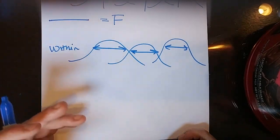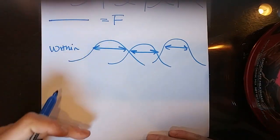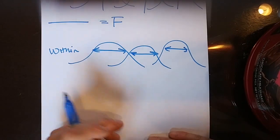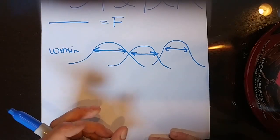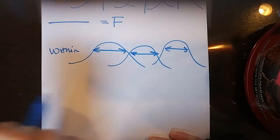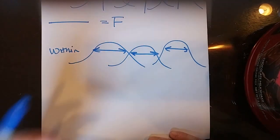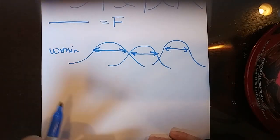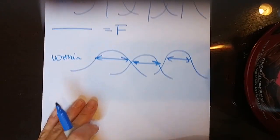Remember when we learned about variability — we had a set of scores and wanted to find the average deviation, but we couldn't just take the deviations, sum them up, and divide, because they would always sum to zero by definition of the mean. So we decided we had to square them. We had to square the deviations so they wouldn't sum to zero, and then we could assess an average deviation. So we're going to use squared values again now.